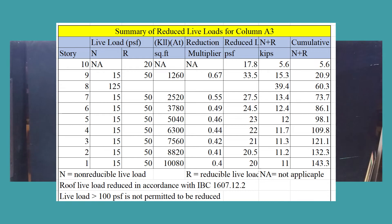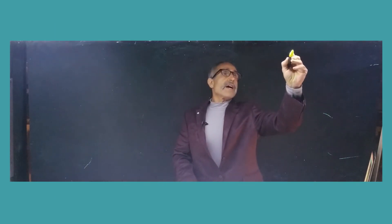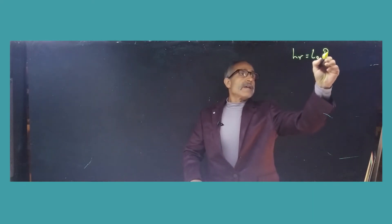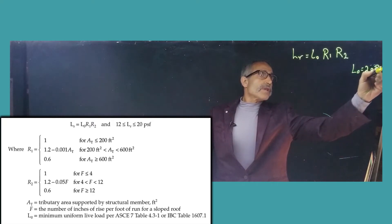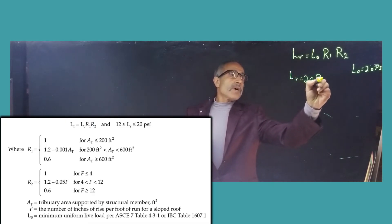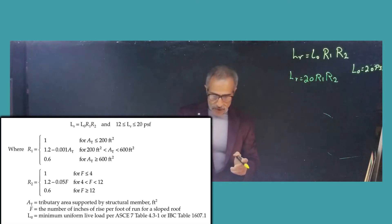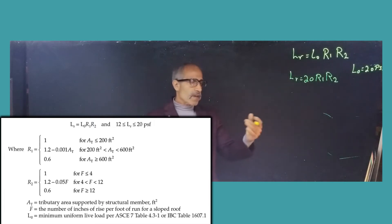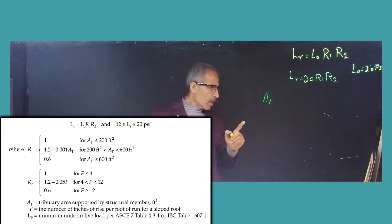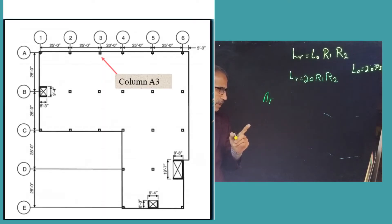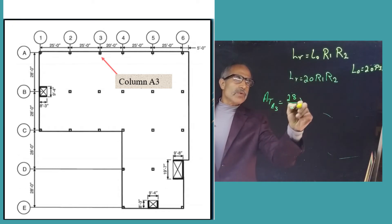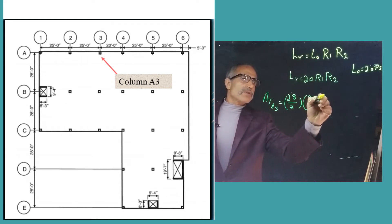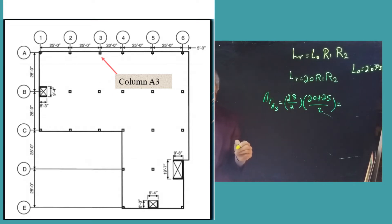Starting with floor 10, the roof: the formula is L_r = L₀ × R1 × R2, and our L₀ is 20 pounds per square foot. So L_r = 20 × R1 × R2. First, we need the tributary area for column A3. Going halfway between that column and the ones on each side: (28/2) in one direction, and (20 + 25)/2 in the other direction — that gives a tributary area of 315 square feet.